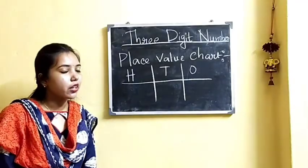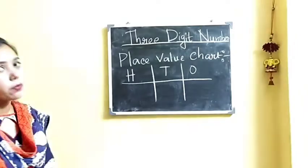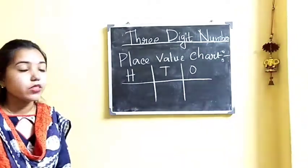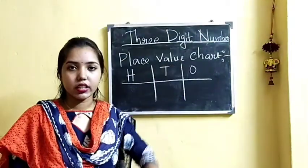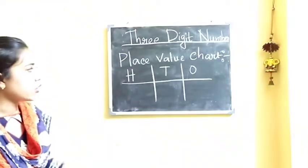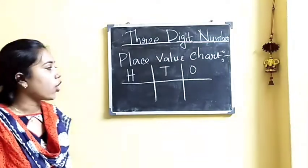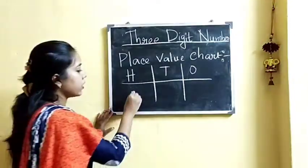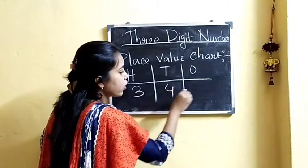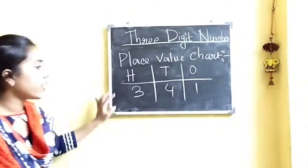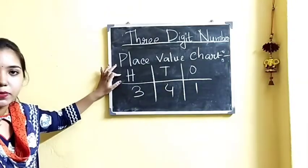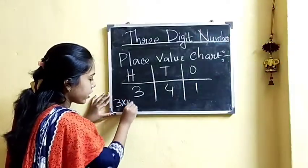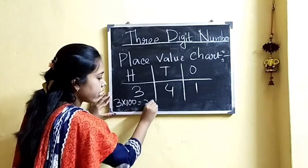Now we will learn to write numbers in expanded form and short form. But before that we need to know the place value chart in detail. Here we have made a place value chart of 100s, 10s, and 1s. Now let us write the number 341. Here 3 is at the 100s place, so the place value of 3 is 3 × 100, that is 300.